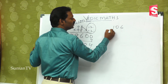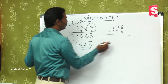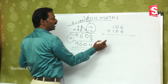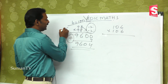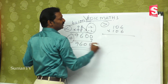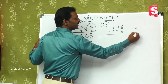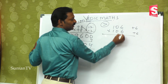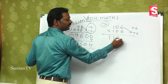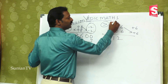Similarly, 106 multiplied by 106. Here the base is 100, but this number is greater than 100, so it is plus 6. That means 106 plus 6, so 112. The base remains 100.